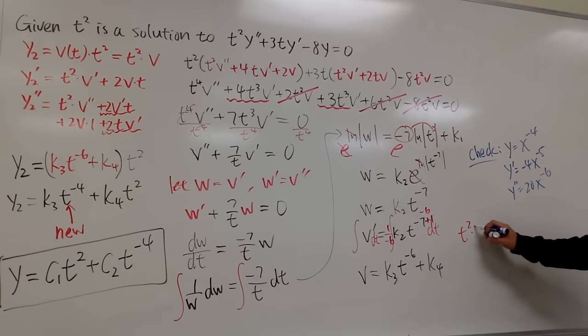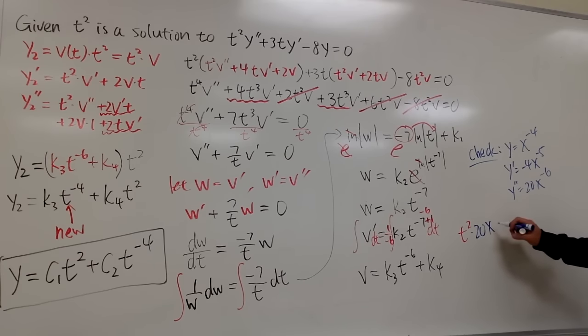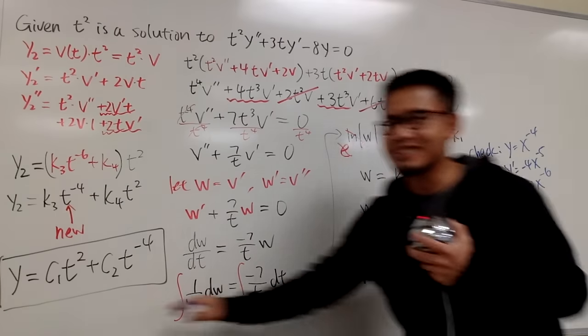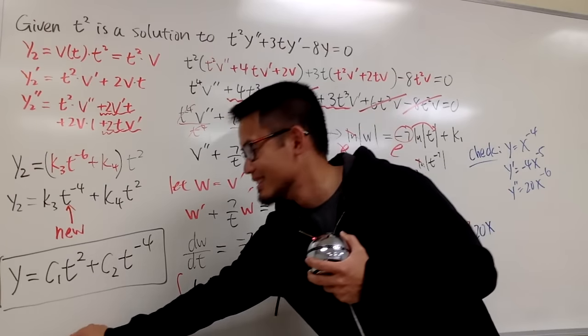So we multiply by 20x — well, I used x, I don't know why I used x, I should use t.